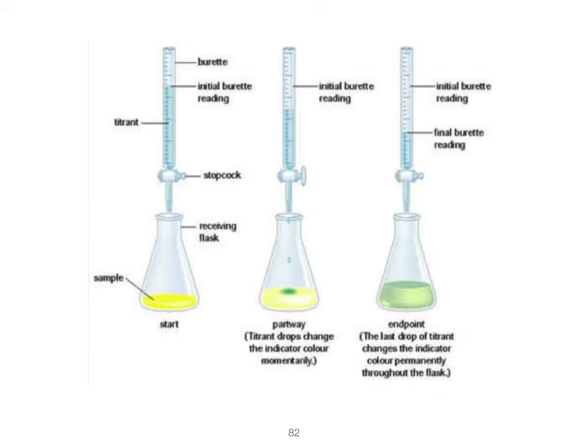In titration we have a setup that looks like this. We have a long tube called a burette that we are able to control the flow of fluids out of. Over top and beneath we have a flask or a beaker — usually Erlenmeyer flasks, which are conical shaped, because it's easy to quickly mix up chemicals. We can just stir it around and everything will stay contained while still mixing pretty thoroughly.